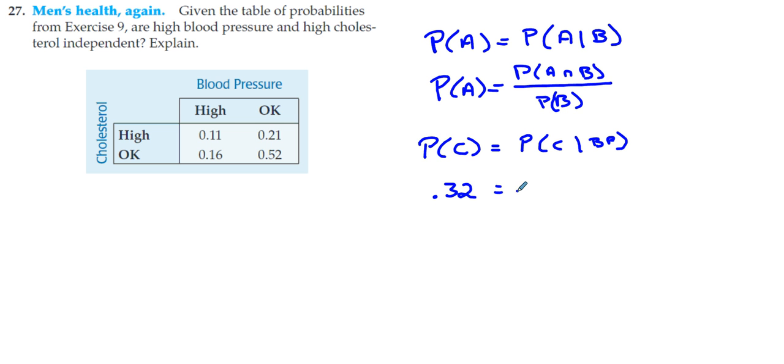Now we're going to compare that. We're going to see if that changes. We're going to find what's the likelihood we find someone with high cholesterol if we are dealing with people that have high blood pressure. We want to limit ourselves to the high blood pressure group.